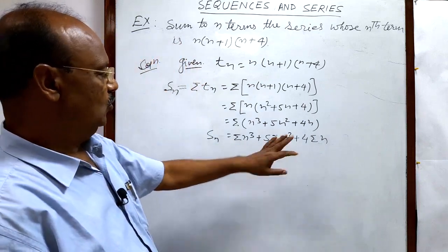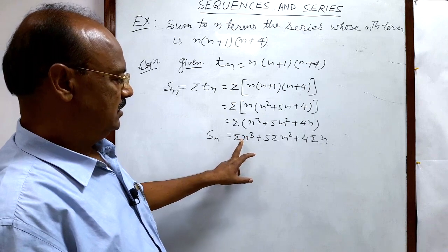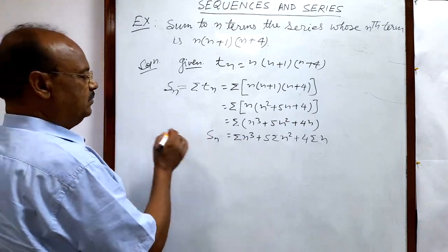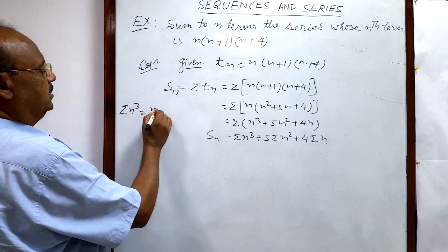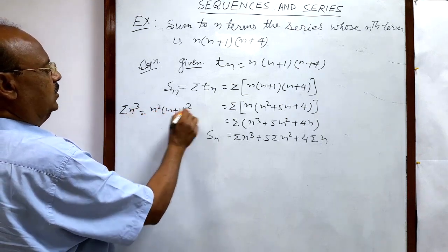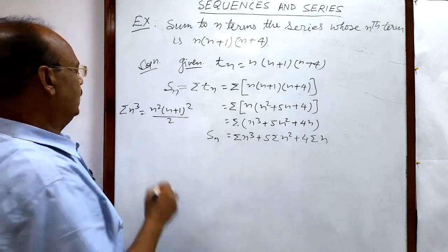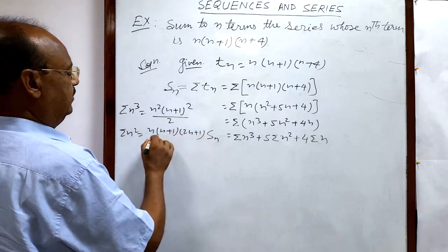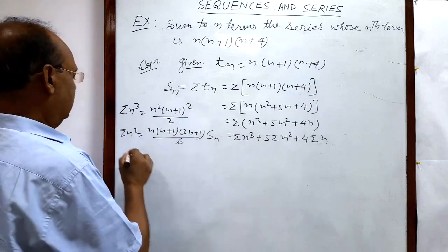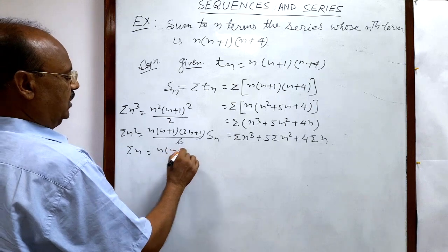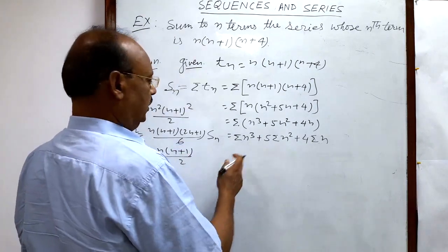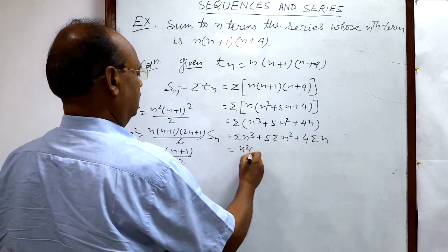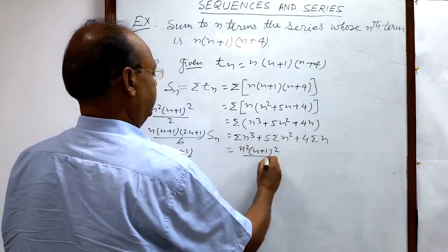Now we have to use some formulas here. For the sum of cubes of the first n natural numbers, sigma n cubed equals n squared into (n plus 1) whole squared divided by 4. Sigma n squared equals n(n+1)(2n+1) divided by 6. And sigma n equals n(n+1) divided by 2. Let us put these values in.